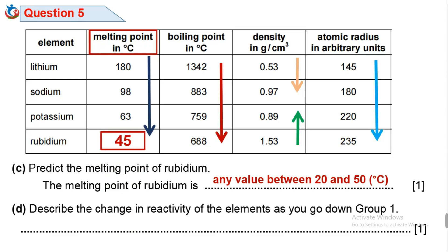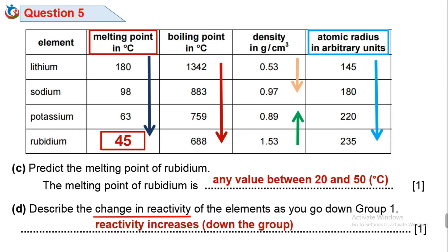Question 5d: Describe the change in reactivity of elements as you go down group 1. As you move down the group of the periodic table, the atomic radius increases, as seen in the column marked sky blue. The tendency to release the outermost electron also increases. Therefore, reactivity increases down the group.